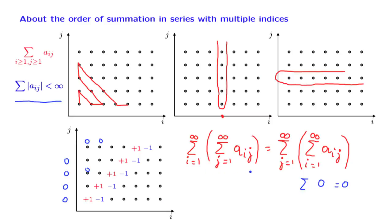But if we carry out the summation in the other order — fix a j and then add over all i's — the first term we get is 1, because in this column this is the only non-zero number. Then in the remaining columns we get 0s, and so we obtain a 1. This example shows that the order of summation actually may matter. In this example, the sum of the absolute values of all the terms is infinity because we have infinitely many plus or minus 1s, so the absolute convergence condition is not satisfied.